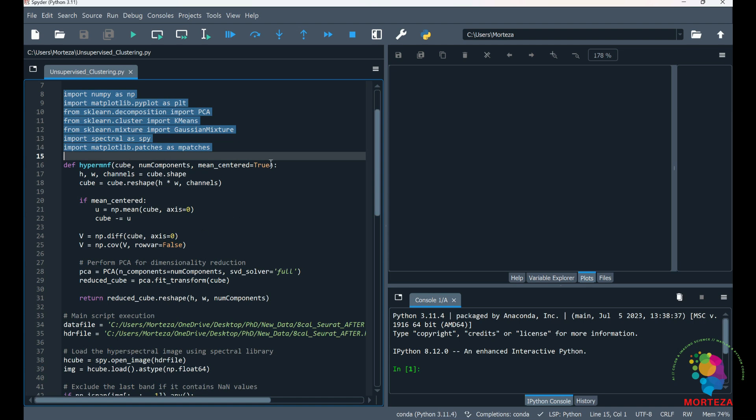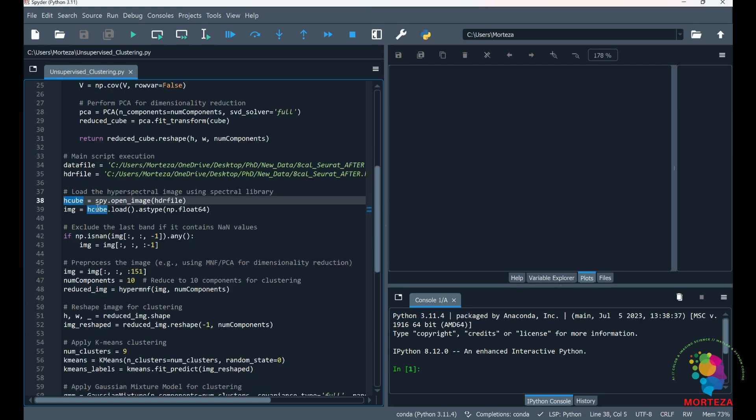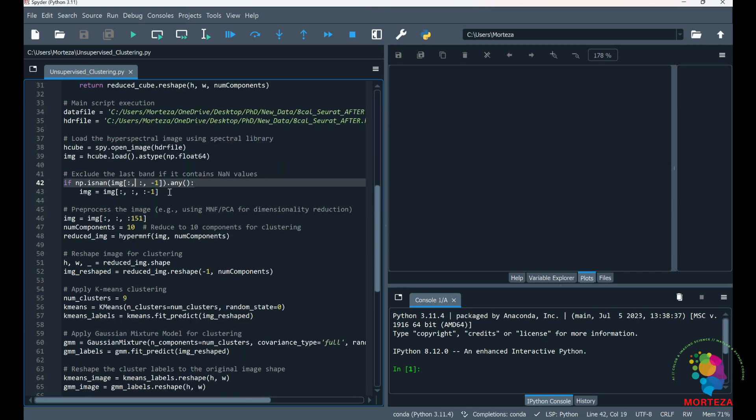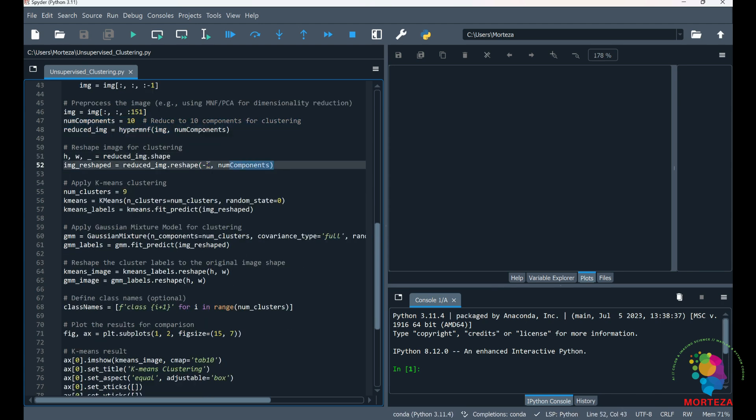And this is the function that does the MNF. MNF, as I said, is similar to PCA, but it also considers the noise. And this is where my data is located. And this is where I'm going to be loading the hyperspectral image using the spectral library. I'm going to be excluding the last band from my hyperspectral data, because the last band has some NAN values. You might not have to do this. And this is where I'm going to be reducing the dimensionality using MNF. I'm going to be using the first 10 components for clustering.